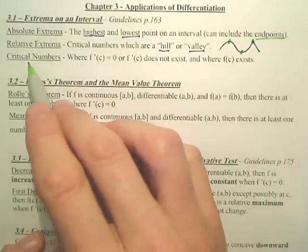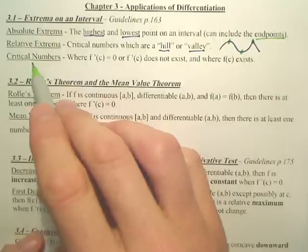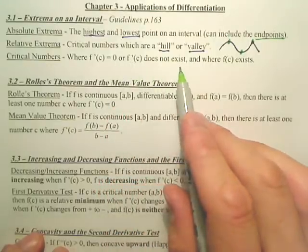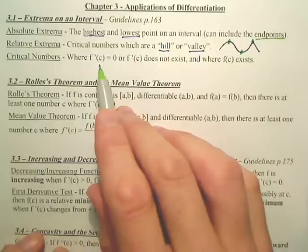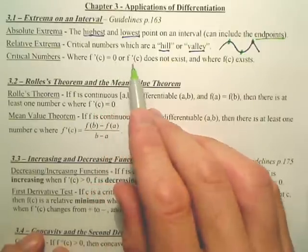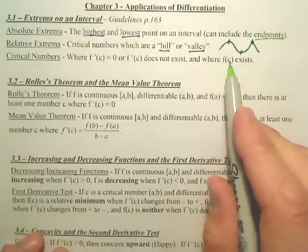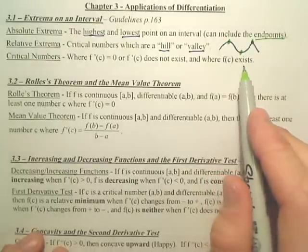The last word is critical numbers. Critical numbers are where the derivative is zero or where the derivative does not exist. And the c value are the values where it equals zero or where it does not exist. But those values, f of c, those values you get have to exist.